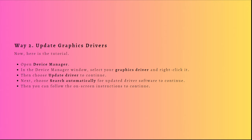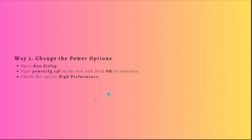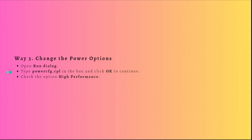Next, what you can do is change the power options. To fix the Rust not responding error, you can choose to change the power options. Here's the tutorial: open the Run dialog and type powercfg.cpl in the box, then click OK to continue.